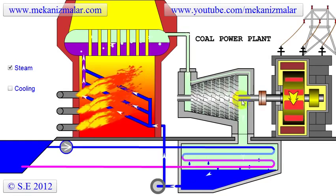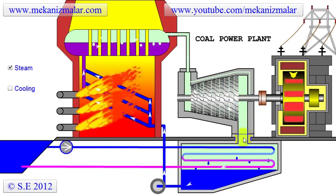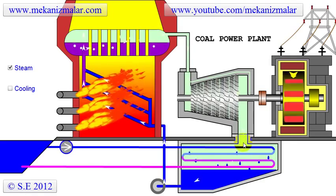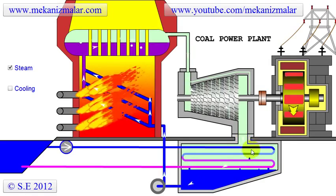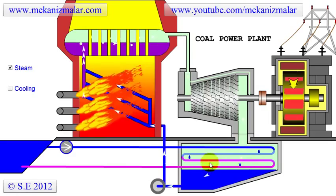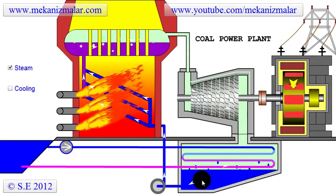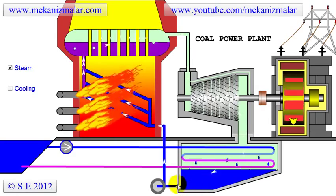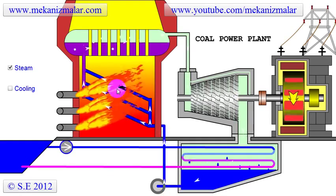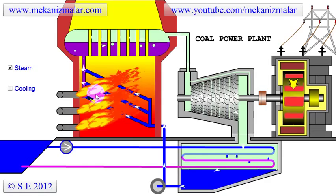The steam leaves the turbine at close to vacuum pressure, near condensation temperature. This saturated dry steam then enters the condenser, where it is condensed to water by the cold water coming from the river. Finally, the condensed water is pumped to the furnace, where it starts heating the coils inside the furnace to complete its cycle.